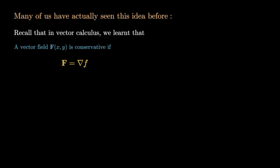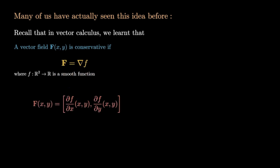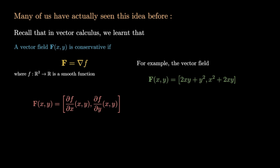Many of us have actually seen this idea before. Recall from vector calculus that a vector field is said to be conservative if it's given by the gradient of some potential f, where f is a smooth function on ℝ². A vector field is conservative if its i-component is given by the partial derivative of f in the x-direction and its j-component by the partial derivative of f in the y-direction. For example, the vector field F(x,y) = (2xy + y²)i + (x² + 2xy)j is conservative with potential f(x,y) = x²y + y²x.